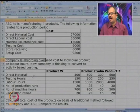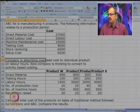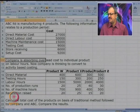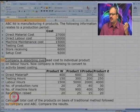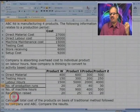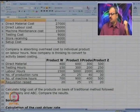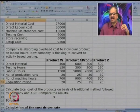Now let us look at another case. They have collected data for four products W, X, Y, and Z. They have identified costs as well as testing hours, labor hours, production runs, machine hours, and requisition rates for these four products. We have been asked to calculate the total cost of each product using both the traditional method and ABC.